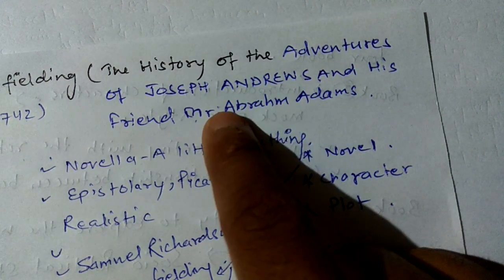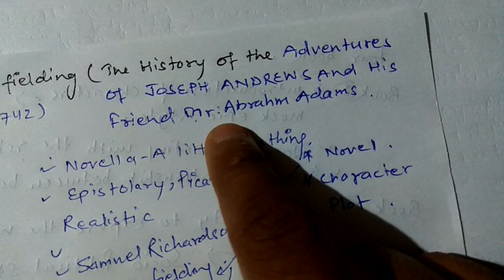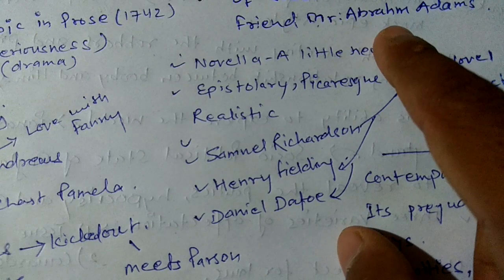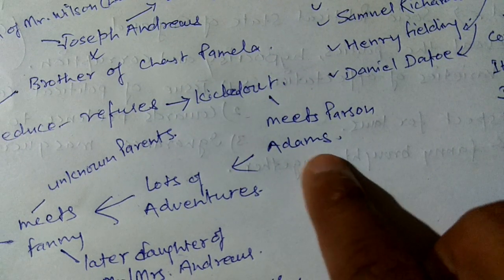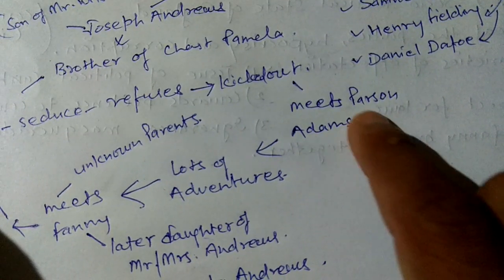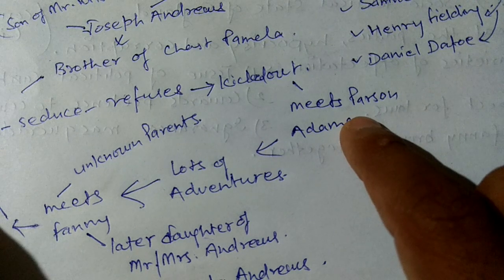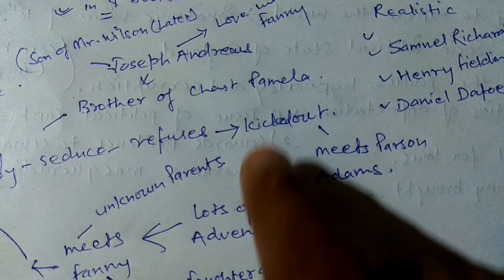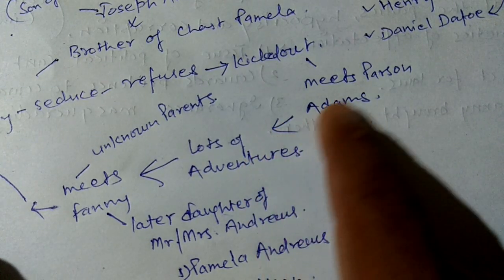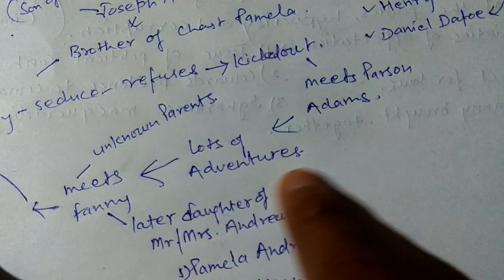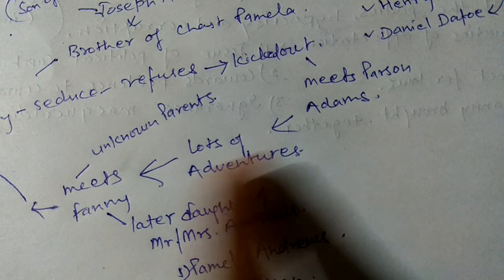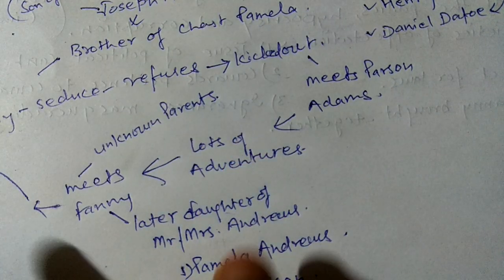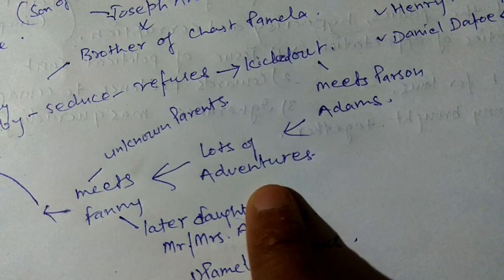He meets Parson Adams — his name was Abraham Adams, as in the full title: The History of the Adventures of Joseph Andrews and His Friend Mr. Abraham Adams. This is the same person he meets. Parson Adams is a great personality who guides Joseph Andrews very well. After that, there are lots of adventures.